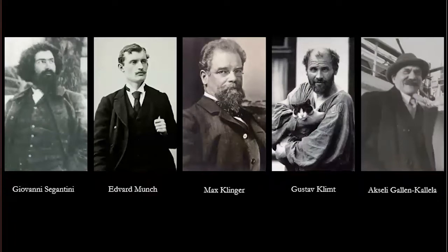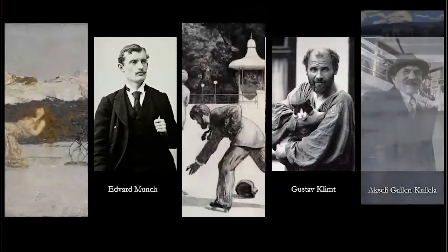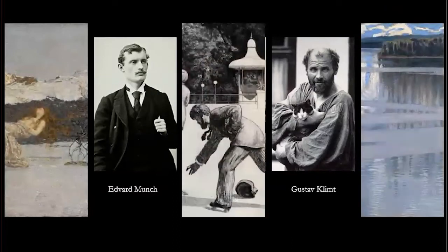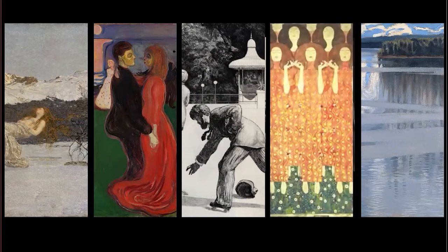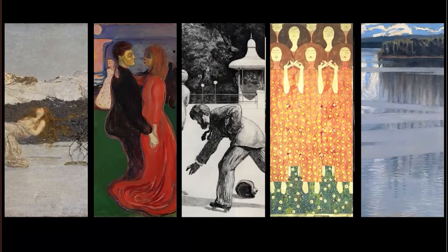Symbolism did not have a distinct technique or method. Segantini, Klinger, and Gallen-Kallela adhered to a naturalistic approach that looked to traditional art and the appearance of reality. Munch tended to use very broad, thick paint strokes, almost flat colors, and simplified forms. Klimt, on the other hand, delighted in intricate detail, line, and surface pattern. Instead of technique or style, it was the themes and the approach to art that marks these artists as symbolists.